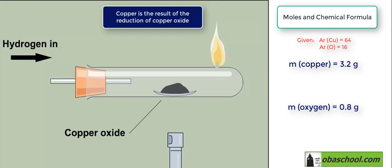The relative atomic mass of Cu, copper, is 64, and that of oxygen, O, is 16. The number of moles is equal to the mass over the relative formula mass. So the number of moles of copper is equal to the mass of copper over the relative formula mass of copper.